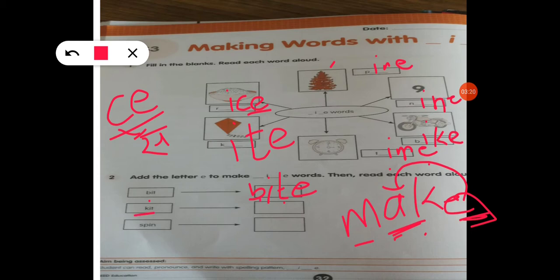Kit. So when we add E letter it becomes kite. Next, spin to spine. So when we add E letter in the end of these words, its meaning and spelling will change.